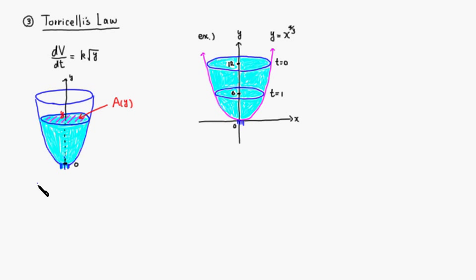So instead of having V, we can express V in terms of y. For example, let's say the tank has a cross-sectional area, a horizontal cross-sectional area, that is some function of depth y, A(y).